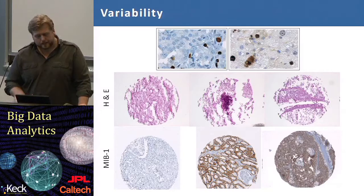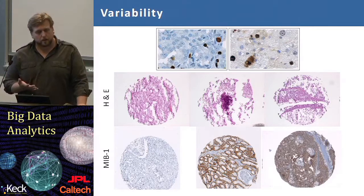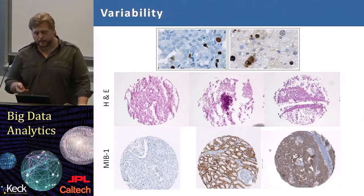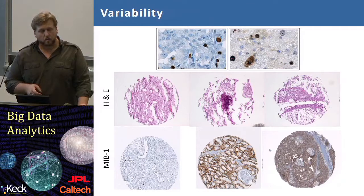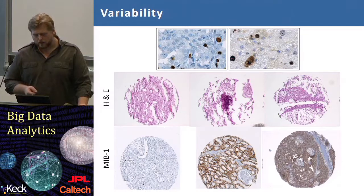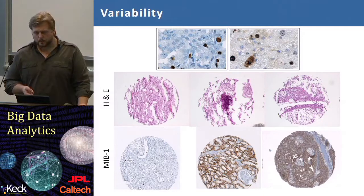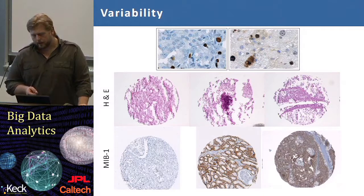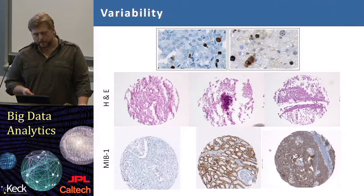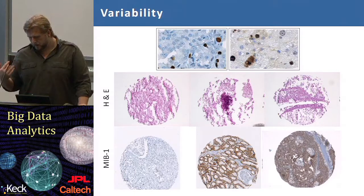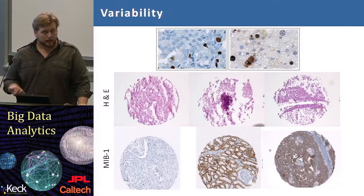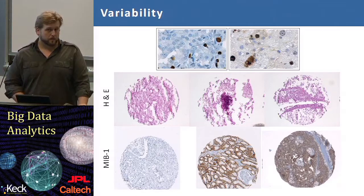In practice, the difficulty comes from a huge variability in these images. You can see H&E staining and single staining examples with over-staining and under-staining, and you can see torn tissue. All these sources of variability can come from biological sources, technical sources, or preprocessing sources.